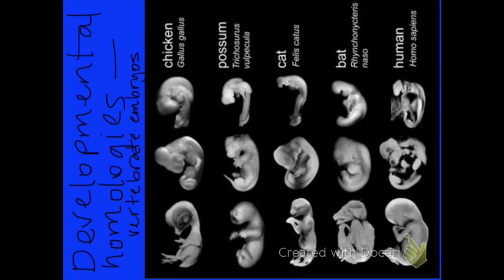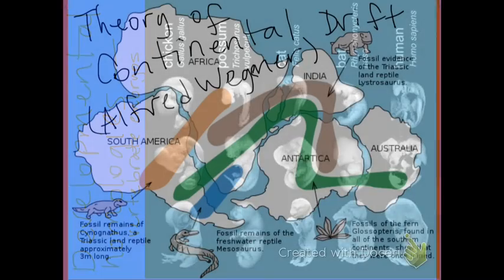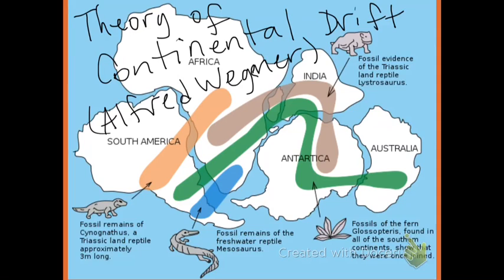These photographs show developmental homologies. Vertebrate embryos are compared here. Look at the chicken, possum, cat, bat, and human embryos for similarities. Alfred Wegener proposed a theory of continental drift to explain why fossils were found on different continents that were separated by oceans.